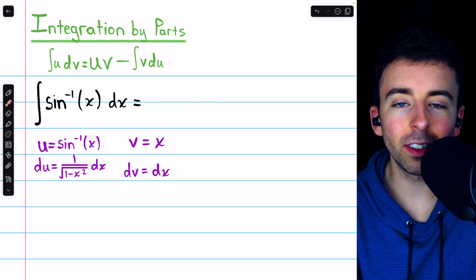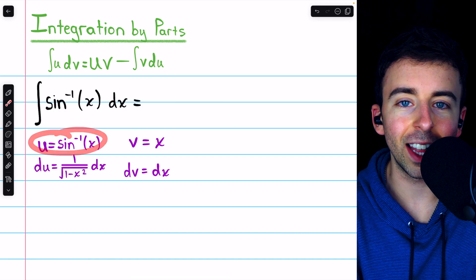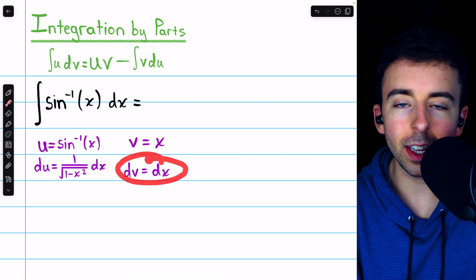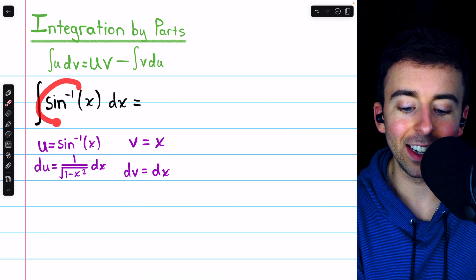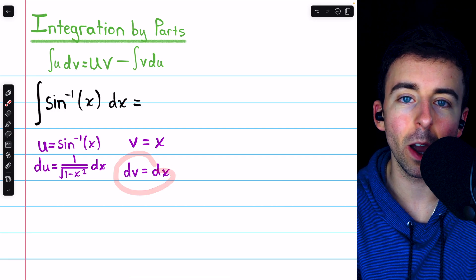When setting up integration by parts here, there's not a whole lot of choice. We have to pick u and differentiate that, and we have to pick dv and integrate that. We don't know how to integrate arc sine, that's the whole issue, so dv definitely can't be arc sine.